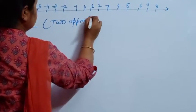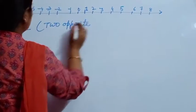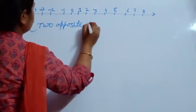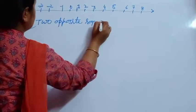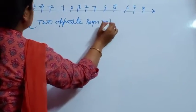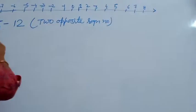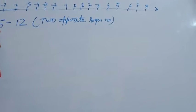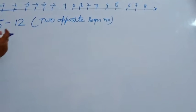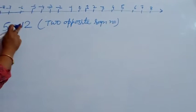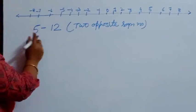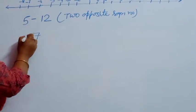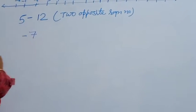What was the rule? Two opposite sign numbers are always subtracted. So we subtract: 12 minus 5 is 7, and with the greater number's sign, the result is minus 7.